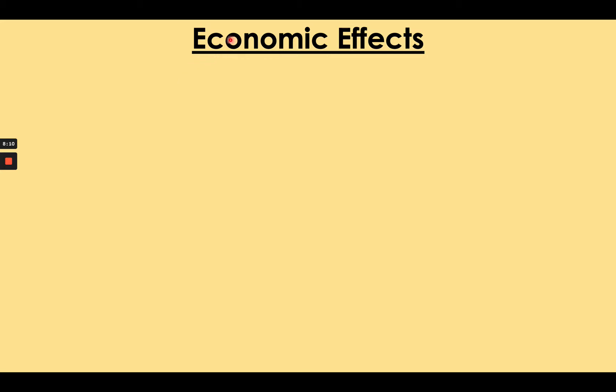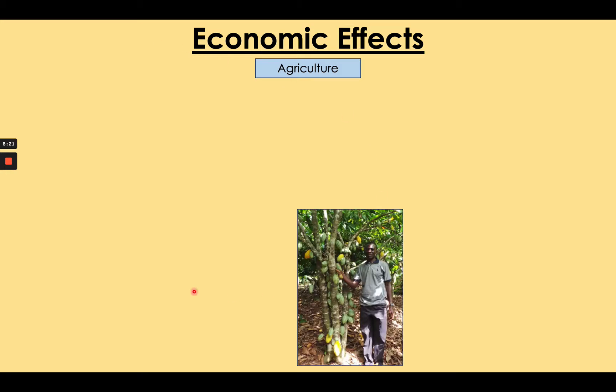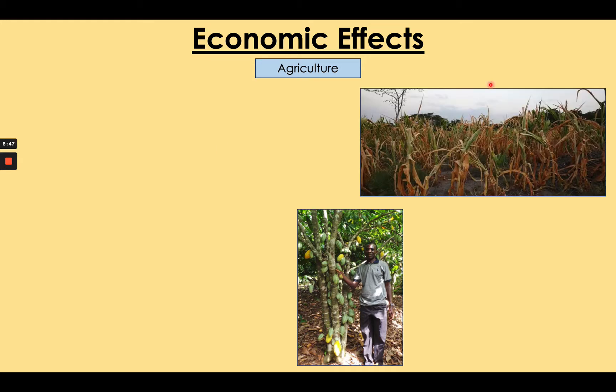Our economies are being affected as well — the amount of money that countries have and the amount of jobs that people have. These are economic effects. Agriculture is the first victim when it comes to economic effects of climate change. This is Ohene, a farmer in Ghana of cocoa as well. His family and he have been important farmers in rural Ghana, producing significant amounts of cocoa that is exported to Europe every year. His income is relatively high compared to the average Ghanaian — however, in the last few years, he's noticed a change.